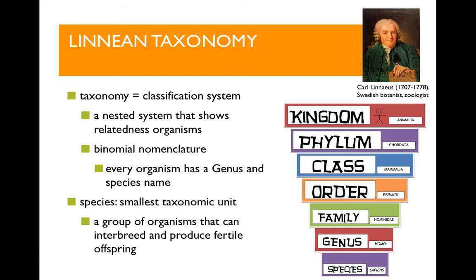For example, all animals are in the same kingdom, Animalia. But within that group, you have smaller groups like the primates, the carnivores, or the fish. Each of those groups is broken down into smaller groups — within the primates you have lemurs, new world monkeys, or apes; within the carnivores, you have felines and canines. And then within those groups you have lions, panthers, or tigers, or within canines you've got wolves, hyenas, or dingoes.